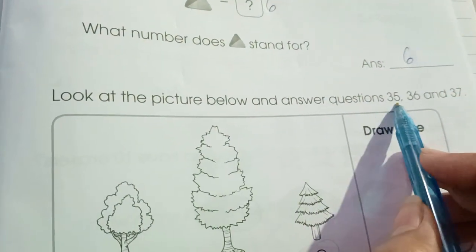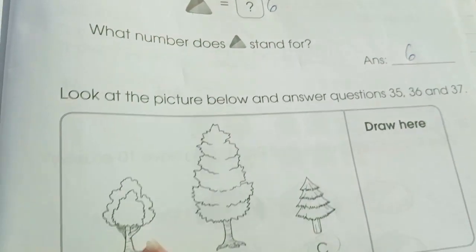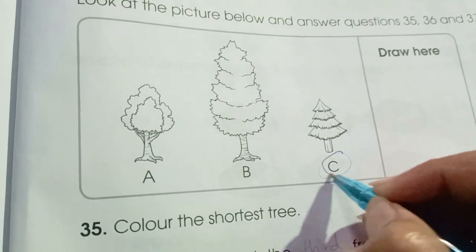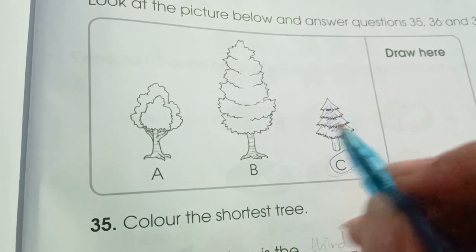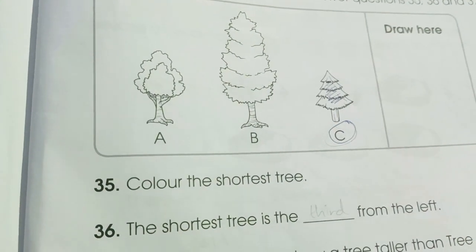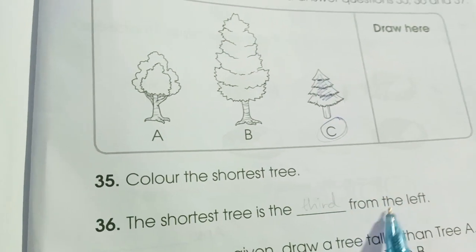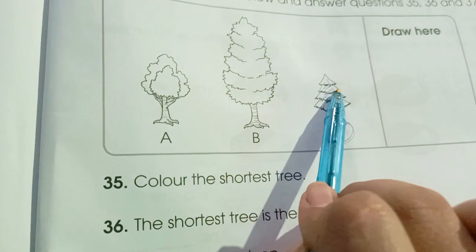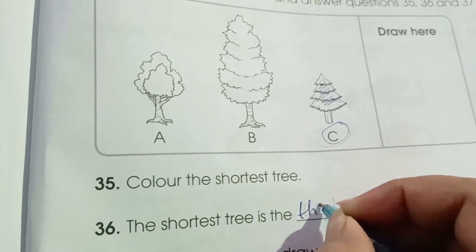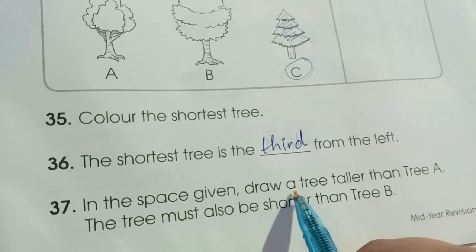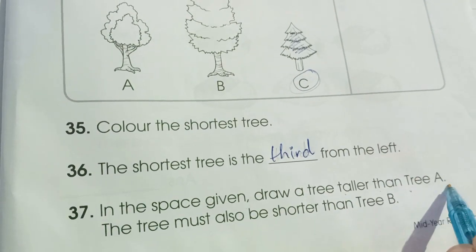Look at the picture below and answer questions 35, 36 and 37. Number 35: color the shorter tree. The shorter tree — we have tree C, we will color it. The shorter tree is the third from the left.